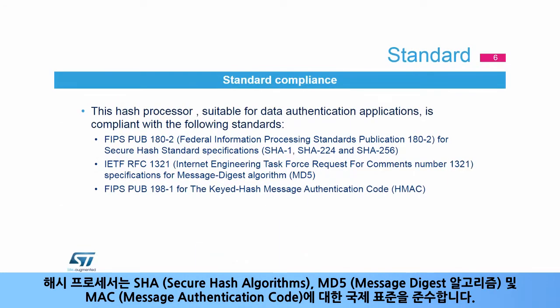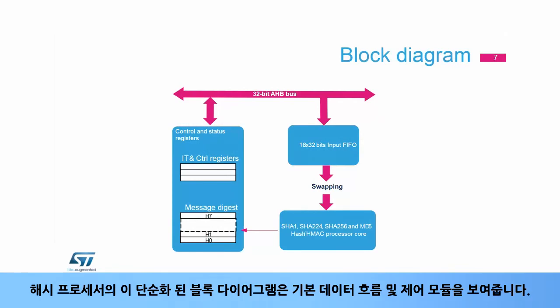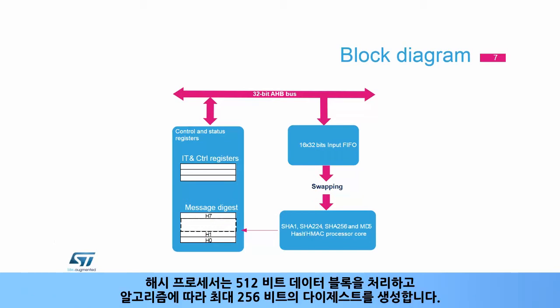The hash processor complies with the international standards for secure hash algorithms or SHA, message digest algorithms or MD5, and for message authentication code or MAC. This simplified block diagram of the hash processor shows the basic data flow and control modules. The hash processor processes 512 bit data blocks and generates digests of up to 256 bits depending on the algorithm.